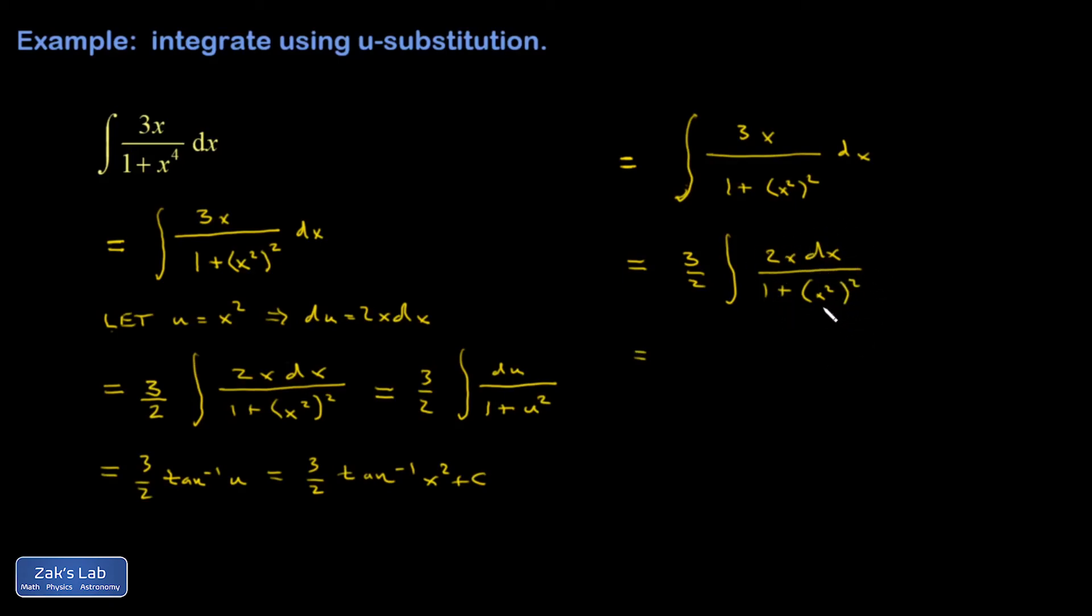1 over 1 plus that thing squared, multiply by the derivative of that thing. So it's in perfect form to just guess now. And of course, either way I do it, I get the same answer.